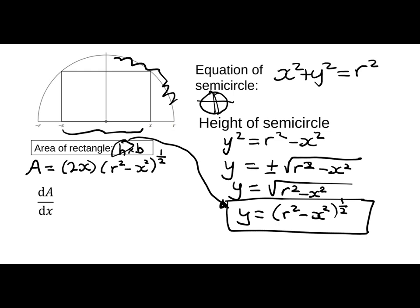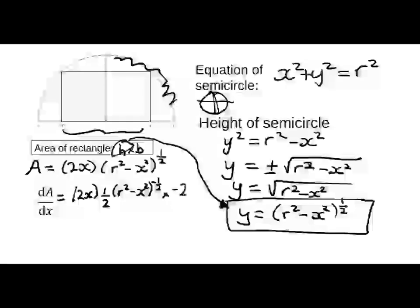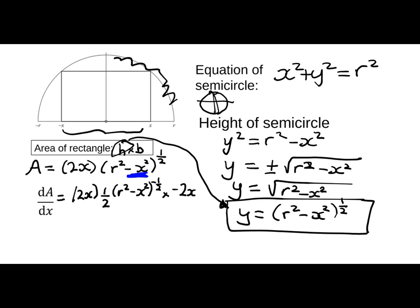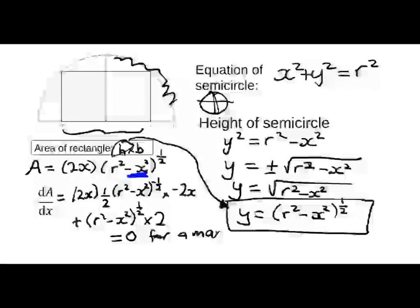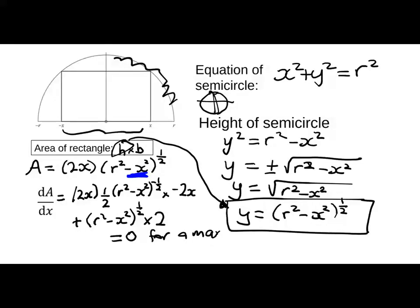We now need to maximize that area. So we're going to differentiate it. So dA by dx is going to need me to use the product rule. So it's going to be the first term, 2x, times the derivative of the second. So half (r squared minus x squared) to the negative of a half. It is an excellence question, so you've got to expect a bit of hard work. Times negative 2x. So the negative 2x is coming from the chain rule. And that's the first part of my product rule. Don't forget to do the second half. So it's going to be plus the second expression, (r squared minus x squared) to the half, times 2. And we need all of that to be 0 for a maximum. So on the next slide, that's what I have to clean up. So we're going to clean that up and solve it.